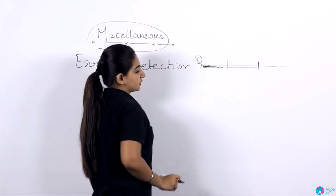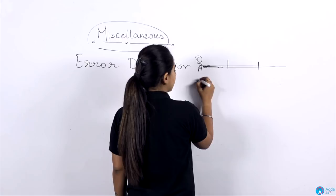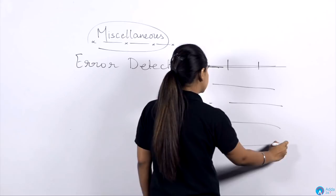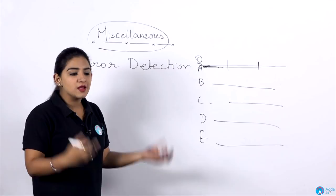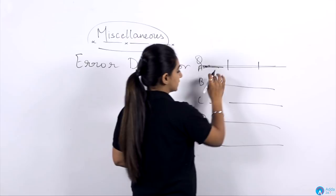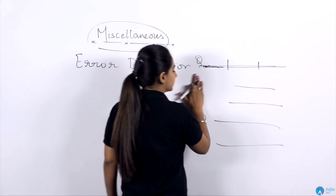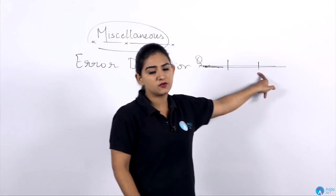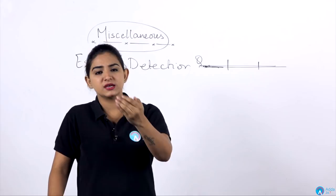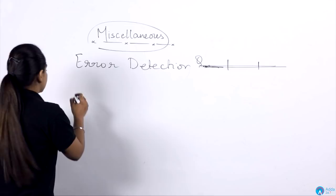Otherwise, the question statement may be written five different ways in the options. You have to judge which one is grammatically and contextually correct using the right words to express the most perfect meaning. Or it can be that options A, B, C, D, and E are all different in meaning — then you have to judge which statement is correct and which has no error.